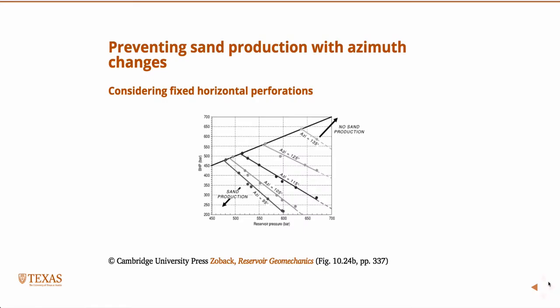The next few plots are different ways of looking at that. If you consider fixed horizontal perforations, these are different azimuths of drilling — as you drill to this azimuth, more to the south, there's no sand production, whereas in the east direction you'll have sand production. These were done with full finite element models computing equivalent plastic strains.